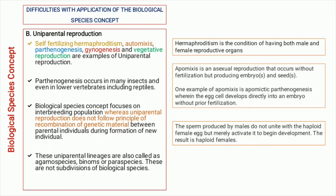Next is parthenogenesis, meaning the development of an egg starts without fertilization by the sperm. Next are gynogenesis and vegetative reproduction, where a new individual forms by budding from the parental body. Parthenogenesis occurs in many insects and lower vertebrates including reptiles — some lizards undergo parthenogenesis. Since the biological species concept focuses on interbreeding populations, it cannot apply where there is no interbreeding or recombination of genetic material. These uniparental lineages are also called agamos species, binomes, or paraspecies.